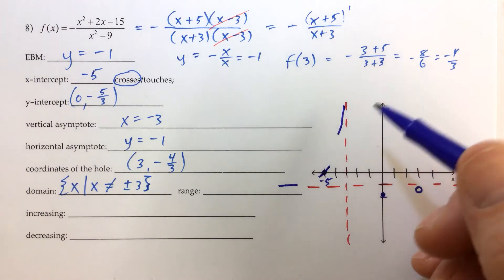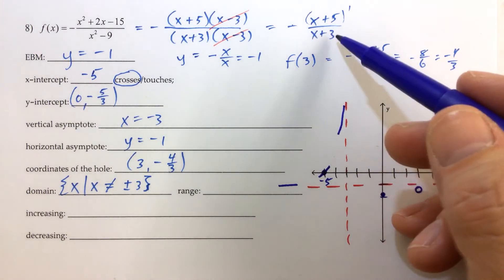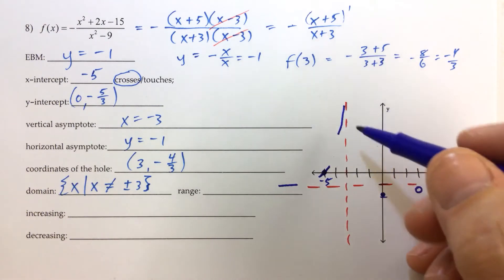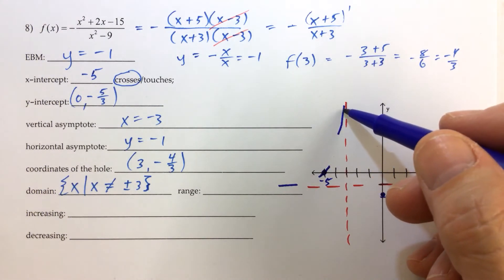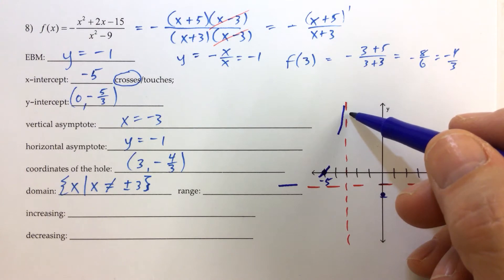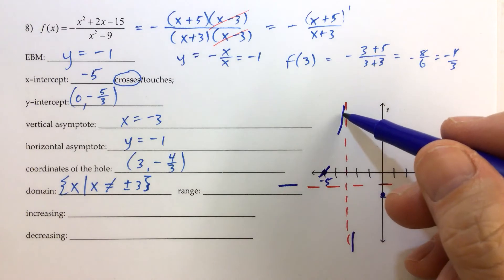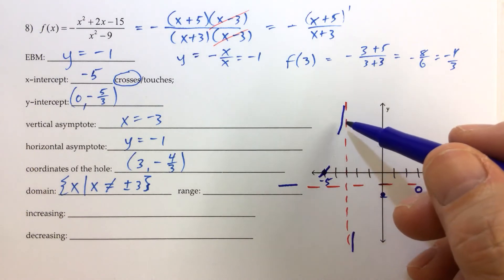And then we know that the multiplicity of the factor in the denominator, x plus 3, we know that that multiplicity is a 1. So therefore, the behavior on the other side of the vertical asymptote here, it can't be up here, it has to be down here, because it's an odd multiplicity of that factor in the denominator.